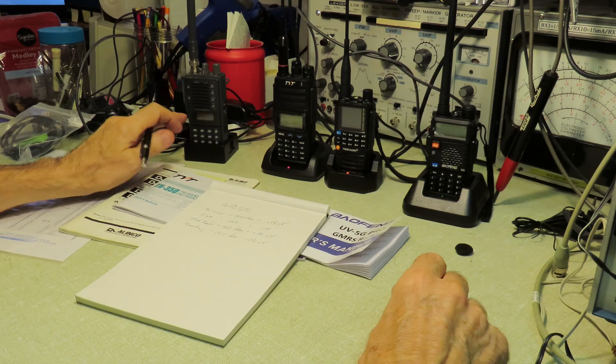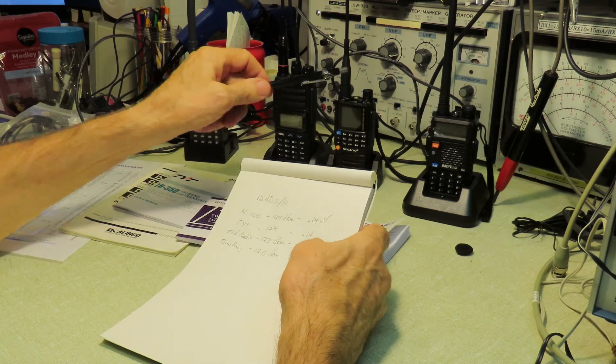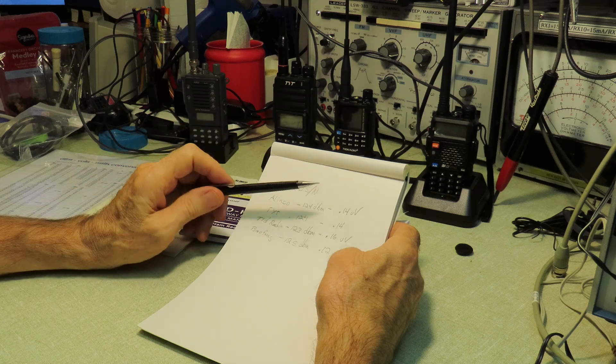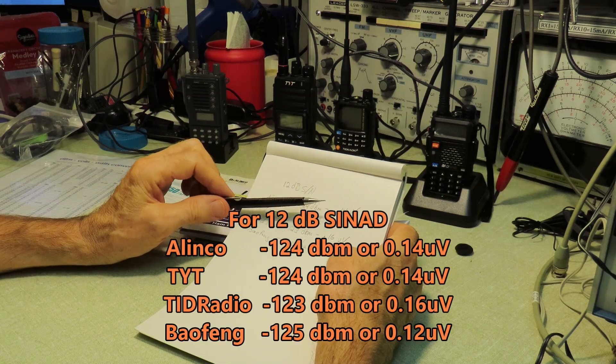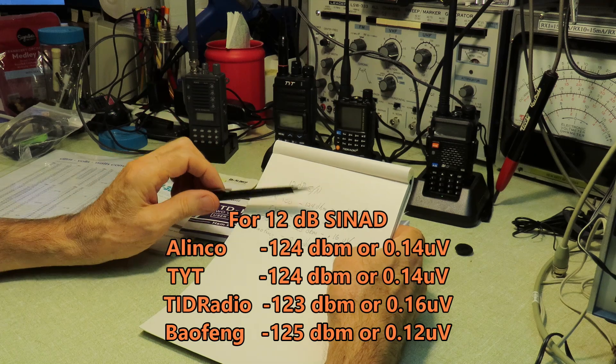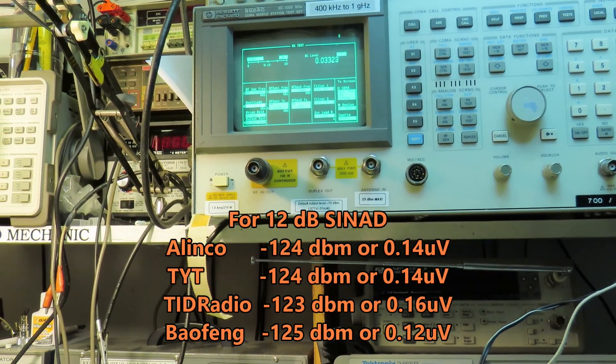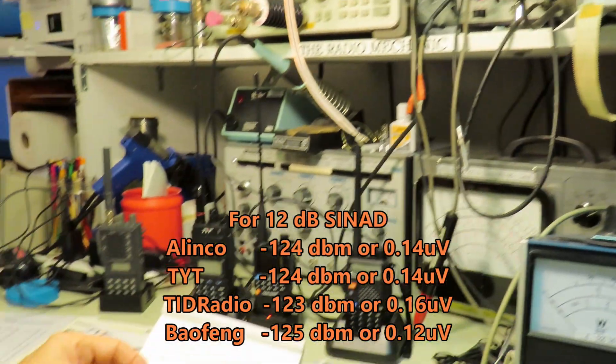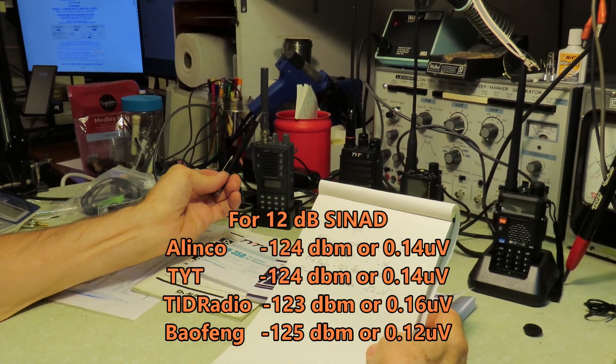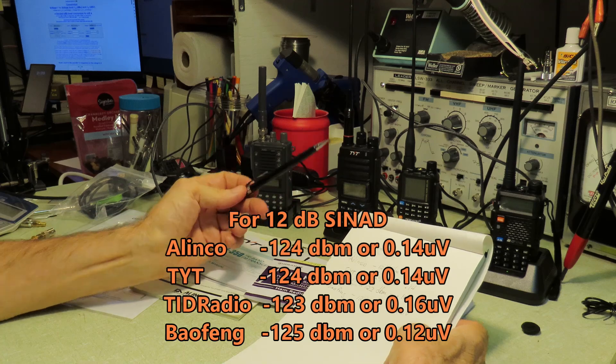My old Alinko here gives us 12 dB SINAD at 0.14 microvolts. And we kind of figured that out during the last review when I reviewed the TID radio, even though we only did the test by air. The conclusion I'd come to at that point was around 0.15 microvolts for a reasonable copy. The Alinko, again, 0.14 microvolts is what it measured. I actually hooked everything up, went to the trouble of digging out cables, and connected it here to this unit. This is a communications mobile test set analyzer. And we went ahead and hooked everything up. Minus 124 dBm, 0.14 microvolts for 12 dB. The TYT was identical. Minus 124, 0.14 microvolts.